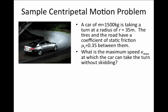If the tires and the road have a coefficient of static friction of about 0.35 between them, we can ask what is the maximum speed at which the car can take the turn without skidding.